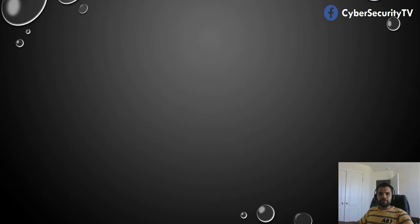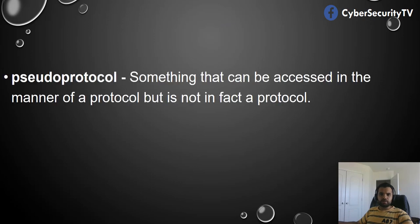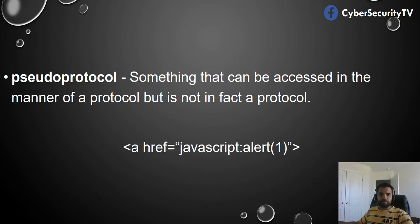Just to quickly remember what the pseudo-protocol is: it's something that can be accessed in the manner of a protocol, but it is not, in fact, a protocol. We saw the example last time — the href, then you put the JavaScript call on alert. Generally we do HTTP, HTTPS, Google.com or something. So JavaScript is not a protocol, but it's a pseudo-protocol. Last time we covered different test cases on how JavaScript encoding works.